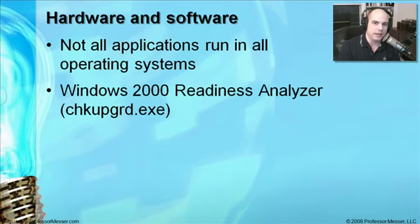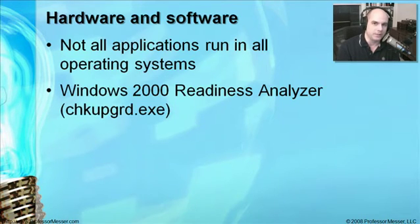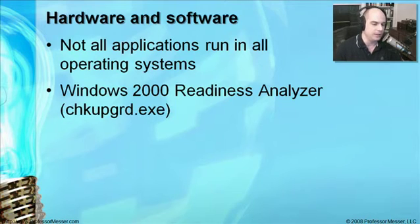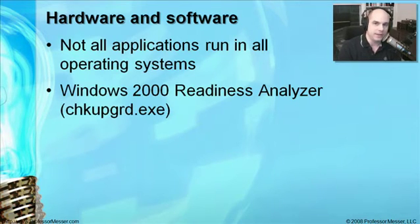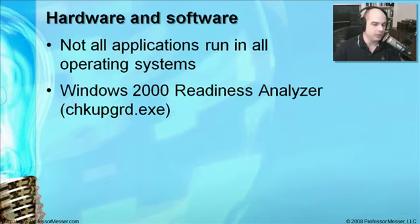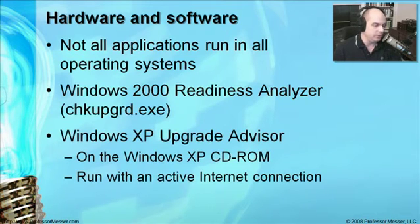Fortunately, Microsoft has created tools available online and on the operating system CDs for Windows 2000 Professional and Windows XP Professional that analyze and check whether your existing hardware is compatible with the new operating system. For Windows 2000, there's the Windows 2000 Readiness Analyzer — the checkupgrade.exe file — which is on the CD and can also be downloaded from Microsoft's website. It will look at your software and hardware and help you determine if what you're running today will support Windows 2000.